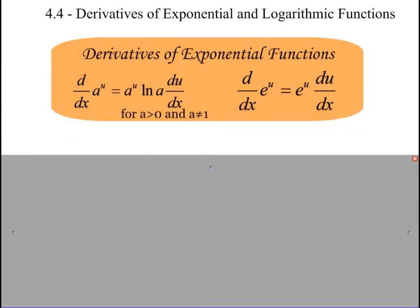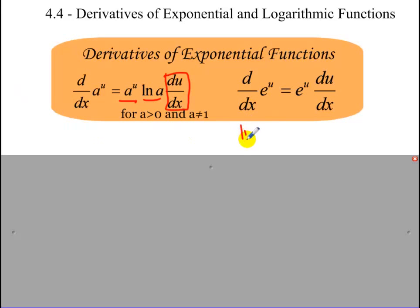The derivative of an exponential function where the base is some number and u is either a function or a variable is what your exponential function originally was, times the ln of your base, times the derivative of whatever is in the exponent. Because the ln of e is equal to 1, the derivative of e to some exponent is just e to that exponent times the derivative of the exponent.